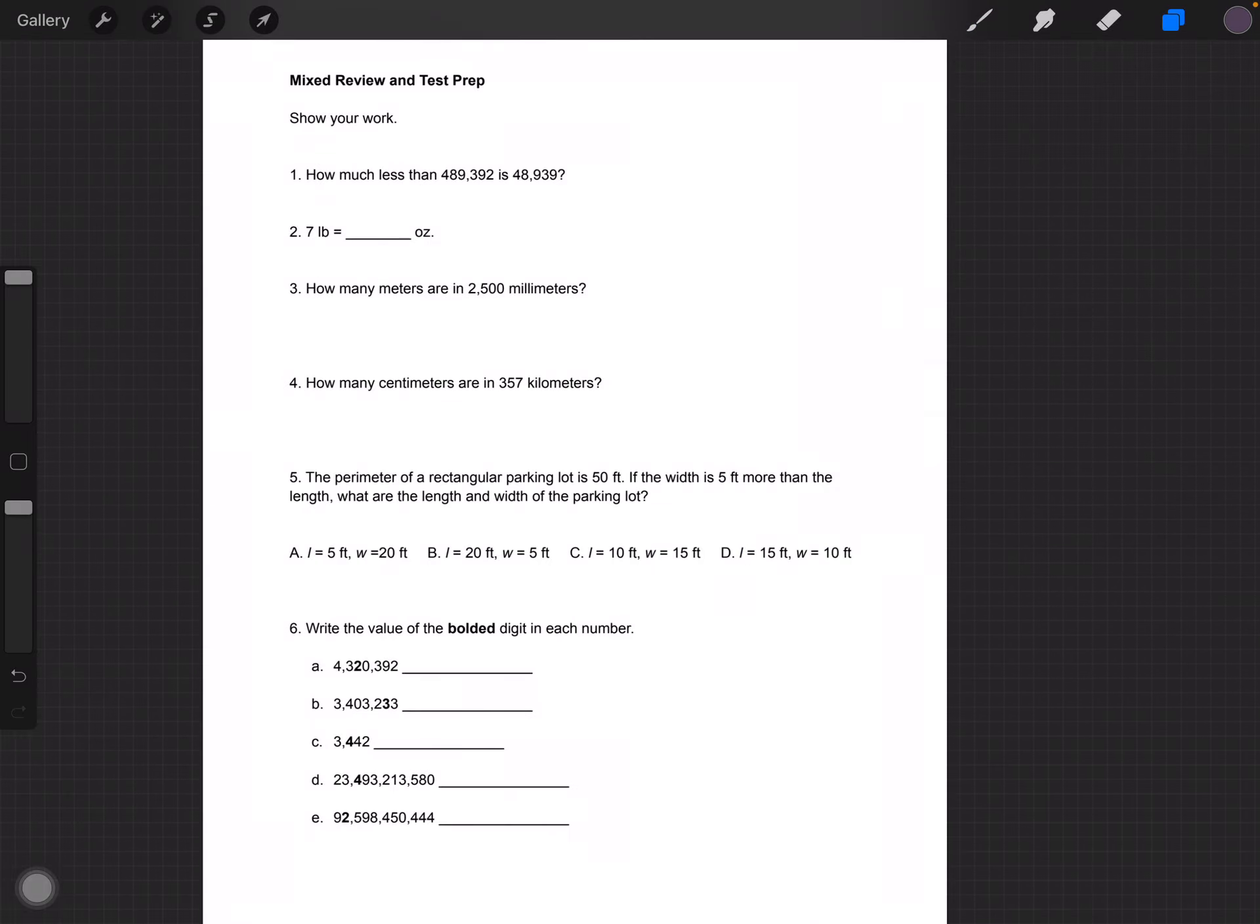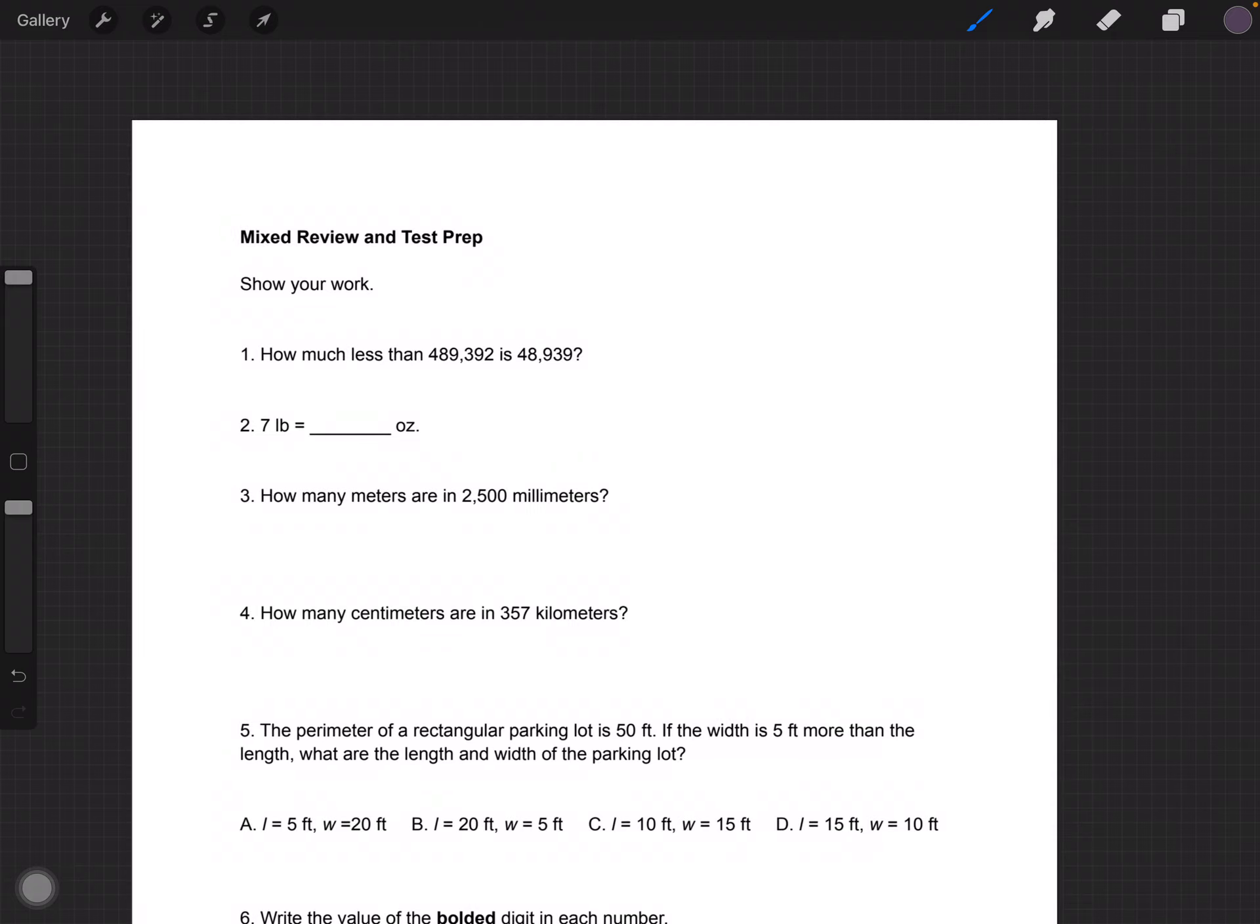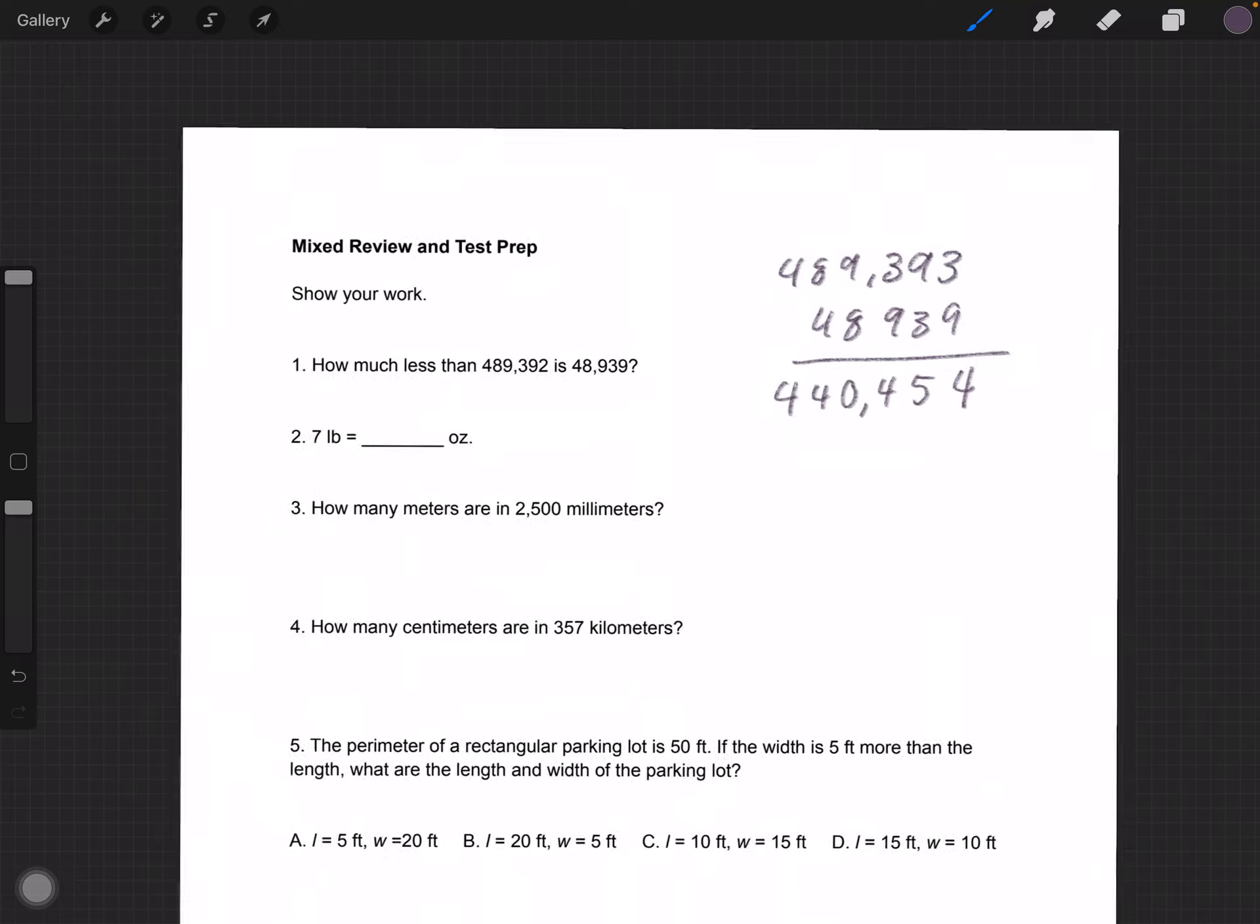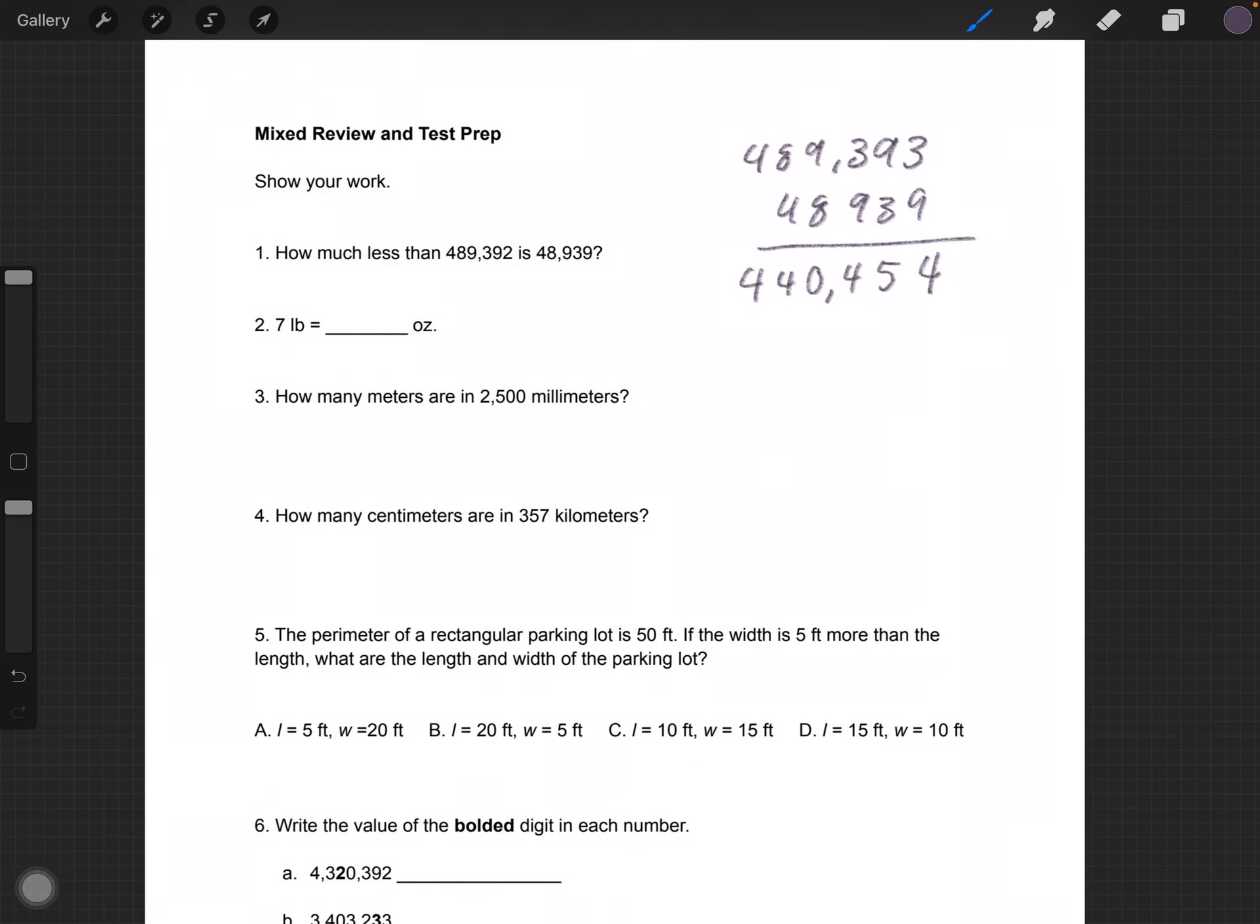The second page is mixed review and test prep. Number one says, how much less than 489,392 is 48,939. So that is simply subtraction that's worded differently. This becomes 440,454.